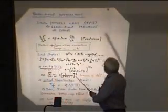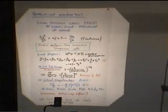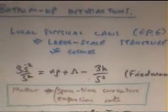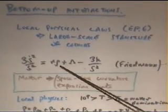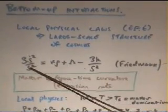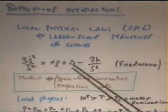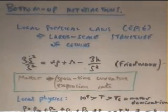Now, let's look at some bottom-up interactions. And this is where local physical laws, for instance, the Einstein field equations, determine the large-scale structure of the cosmos. For instance, the Friedman equation, which I wrote down before. And what you have is a local matter density, rho, there. And that local matter density then determines the space-time curvature and the rate of expansion of the universe. And we've looked at that in some detail.